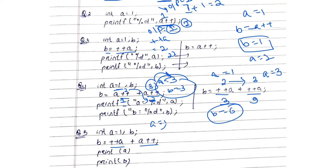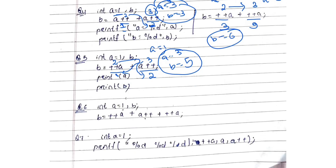Here one is pre-increment and another is post-increment in b = ++a + a++. Evaluating left to right: ++a gives a = 2 (1+1). Then a++ is post-increment, so 2 is assigned first, then a increases to 3. So b = 2 + 2 = ... now a becomes 3, and b = 3 + 2 = 5.